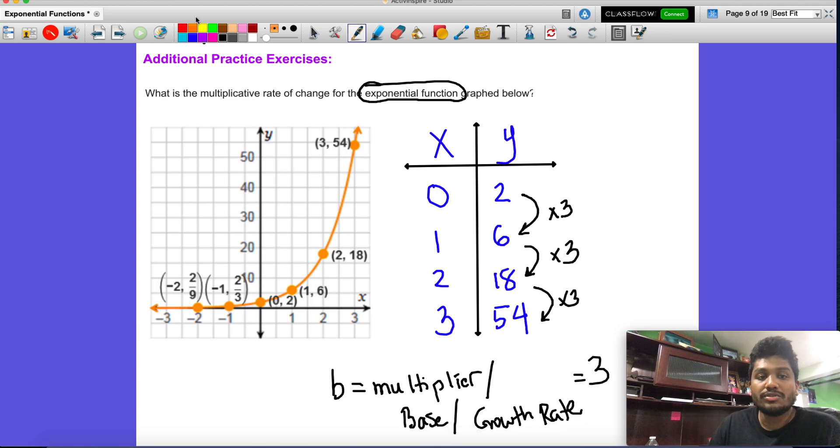All right, if we were to actually just go one step further and make the equation for this, so like y is equal to a times b to the x, what would our a value be?